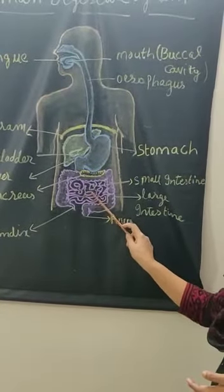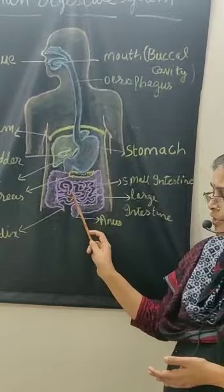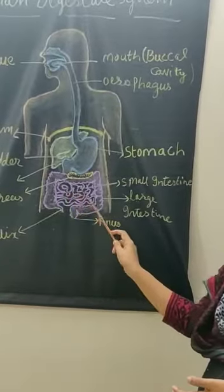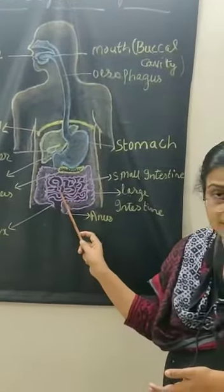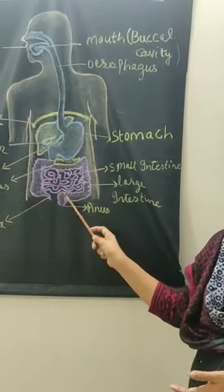There are small finger-like projections found in the small intestine called villi, which increase the surface area of absorption.